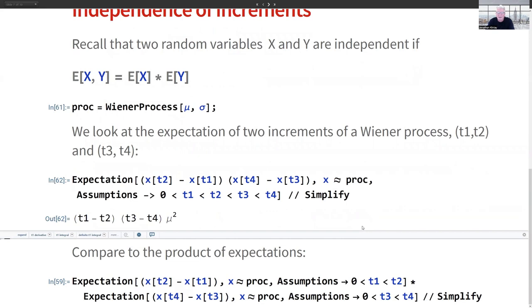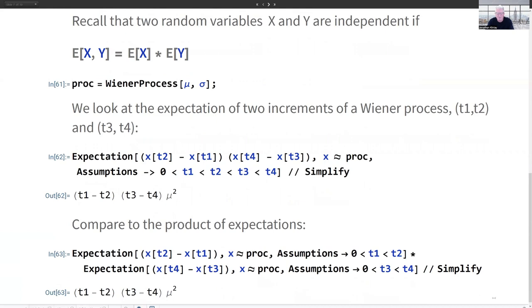Now let's compare that to the product of the two expectations. First of all, the expectation that x of time t2 minus x of time t1, and multiply that by the expectation of x of time t4 minus x of time t3. We do that computation and it turns out to be the same: t1 minus t2 times t3 minus t4 times mu squared.